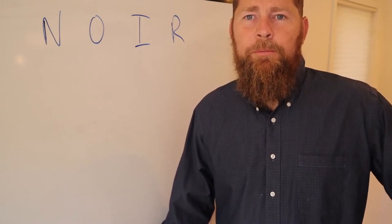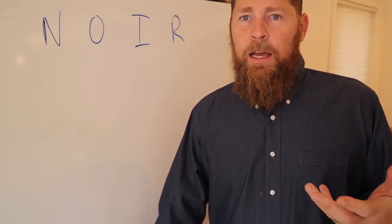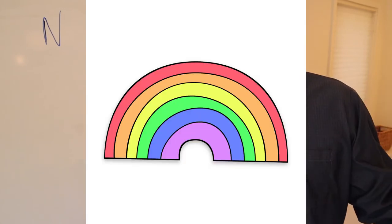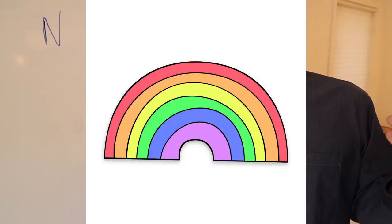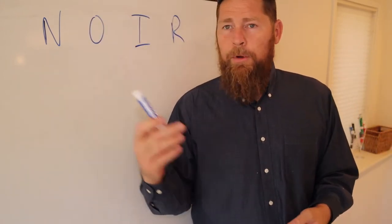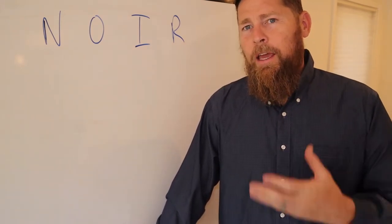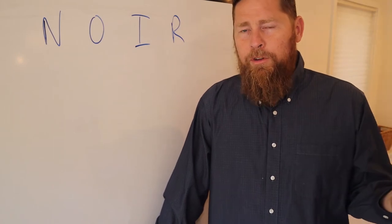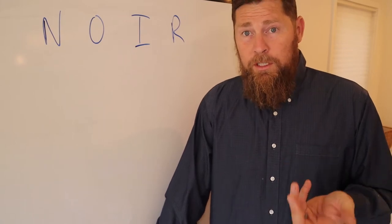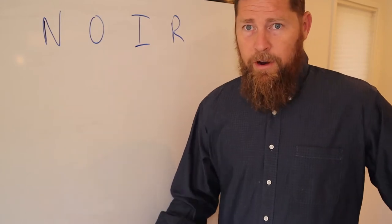N stands for the nominal scale, the lowest possible measurement scale. It just means that things differ in name only. I have a blue shirt or a black shirt — blue, black, red, green — these are differing only in name. All of those are colors of shirts. There's no magnitude relationship difference; a blue shirt is not somehow more of a shirt than a red shirt. They're both just colors, but they are different colors, so that's why it's a variable.